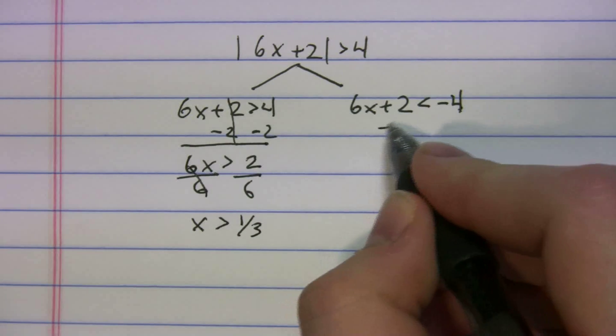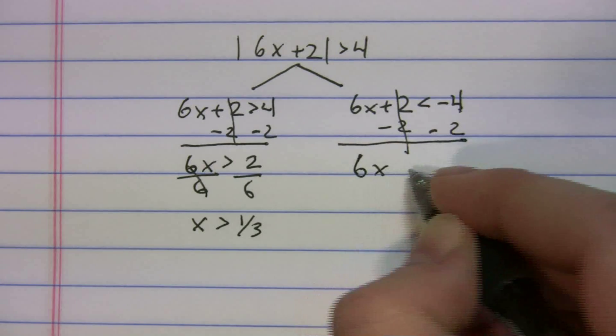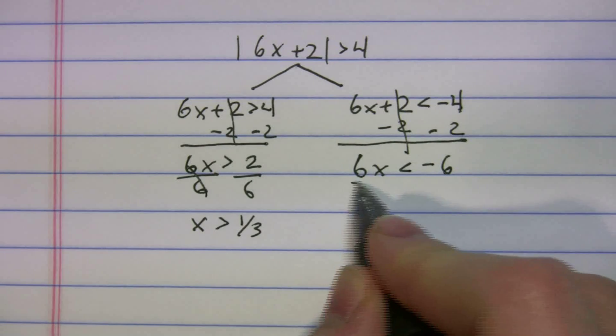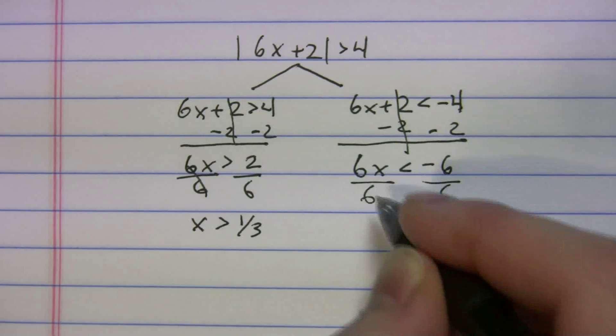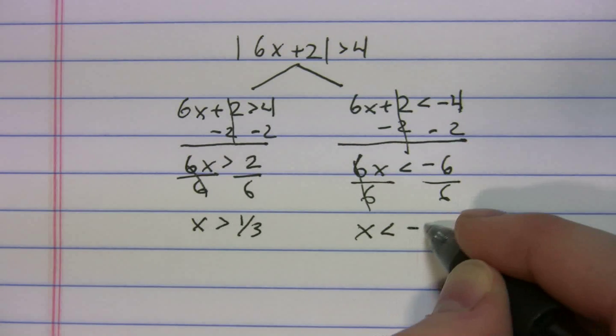We'll do this side. Minus 2, minus 2. 6x is less than -6. Divide by 6, divide by 6. x is less than -1.